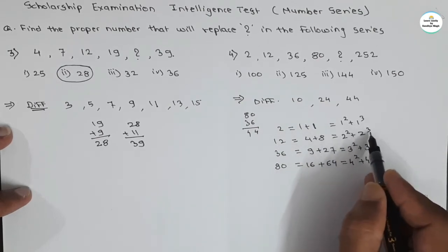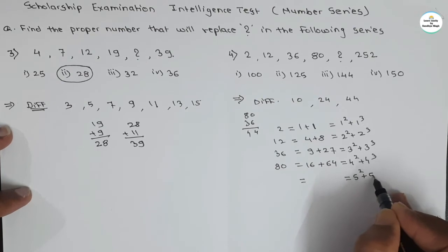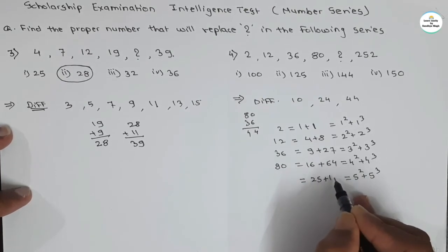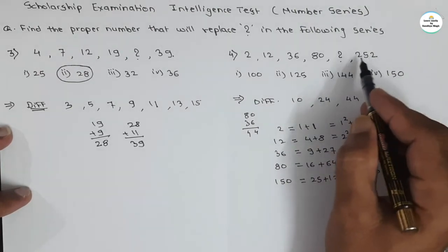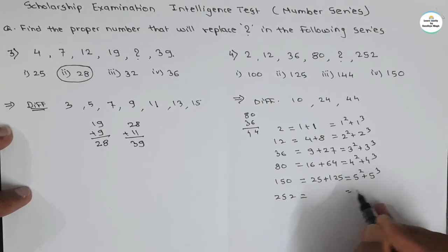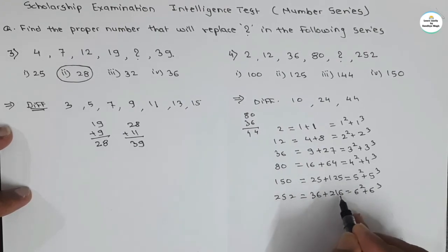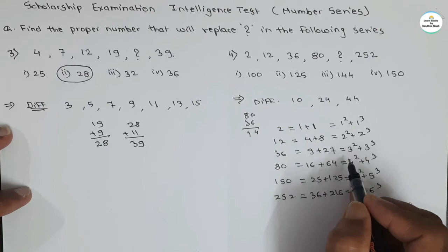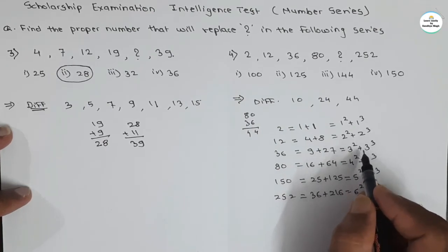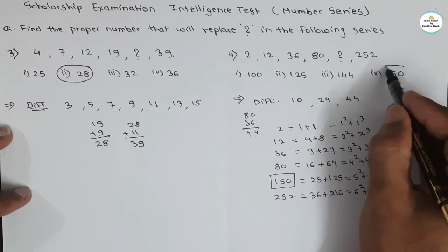So the numbers are the addition of a number's square and its cube. 2 is 1² + 1³, 12 is 2² + 2³. Taking this rhythm, the missing number must be 5² plus 5³. 5 squared is 25 and 5 cubed is 125, so the addition is 150. Let's verify with 252: it is 6² plus 6³ — 6 squared is 36 and 6 cubed is 216, and 36 plus 216 is 252. This rule is applicable. So 150 is our correct answer, and the 4th option is correct.